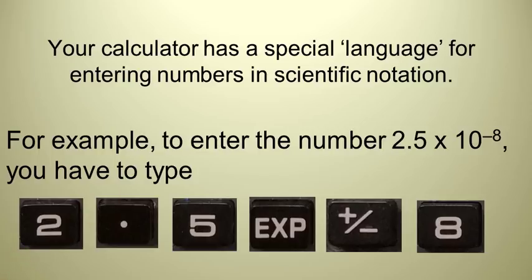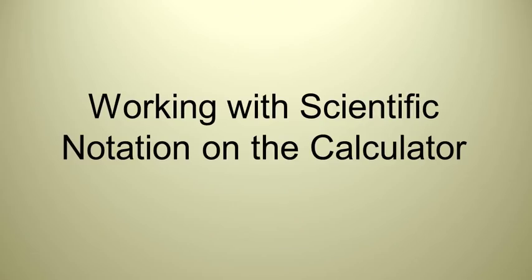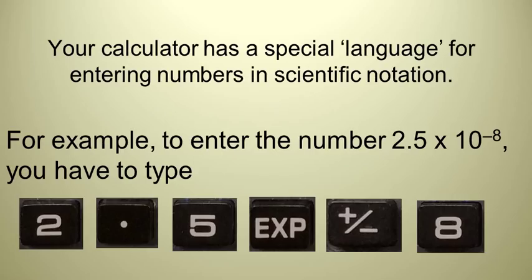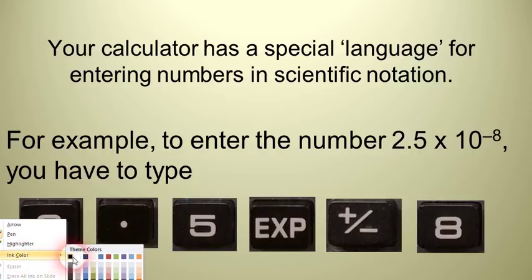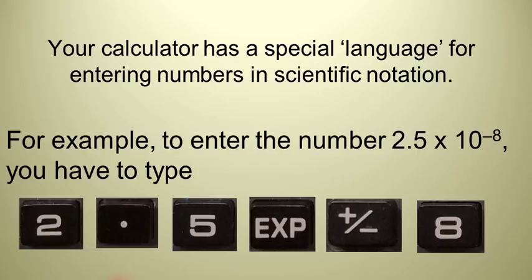and you just start typing 2.5 and then the times button, and then 10 and then the EXP and then the negative 8, you're going to have probably the wrong answer. You need to use the special keys that your calculator has in order to work in scientific notation.